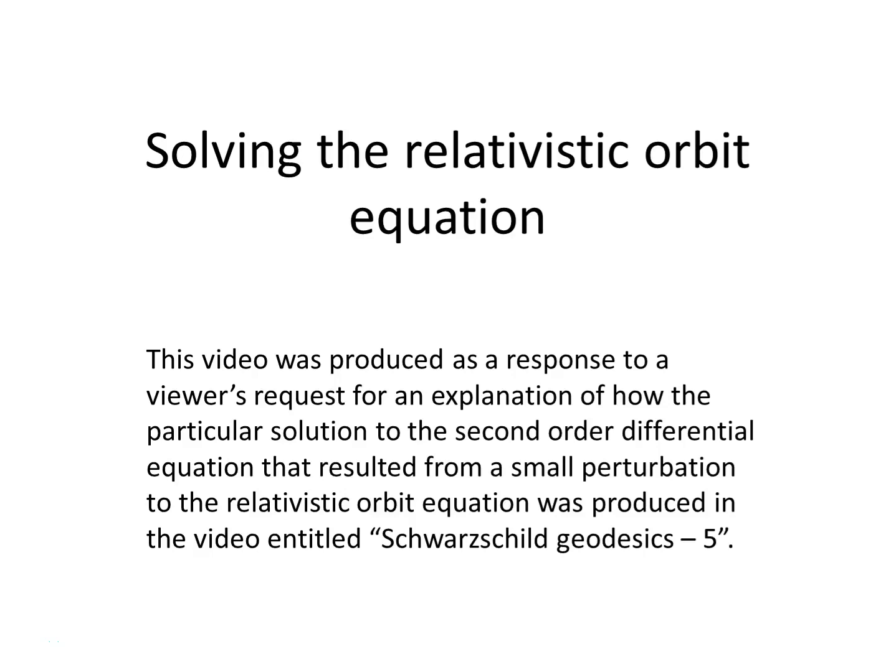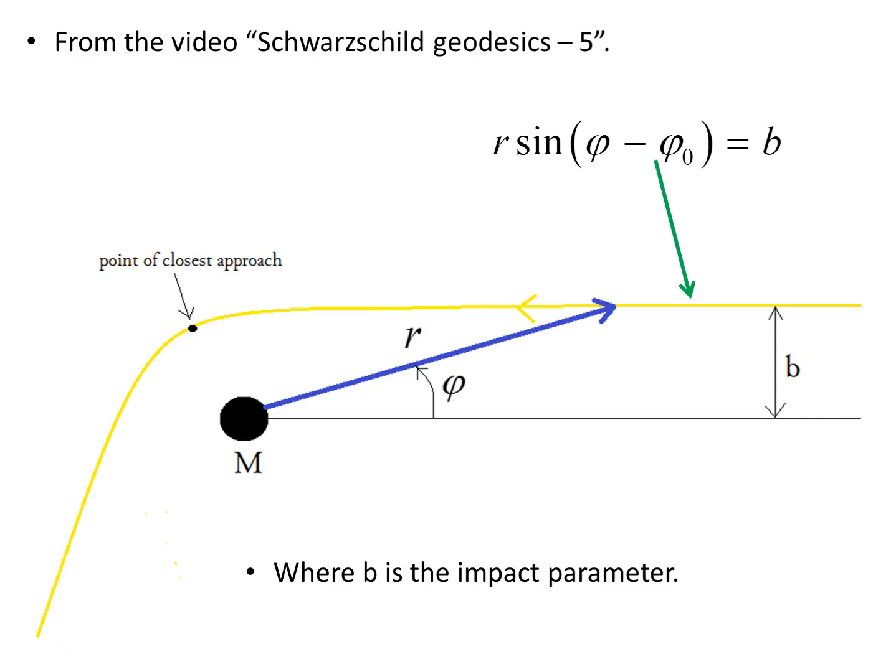This video was produced as a response to a viewer's request for an explanation of how the particular solution to the second-order differential equation — resulting from a small perturbation to the relativistic orbit equation — was produced in the video entitled 'Schwarzschild Geodesics Number Five.' This is a special request, so we'll go back over the basics from that video.